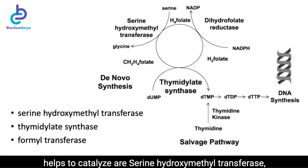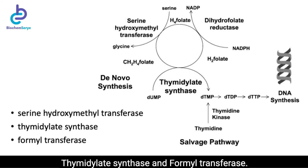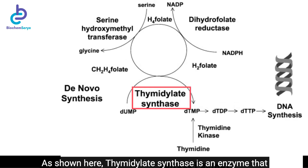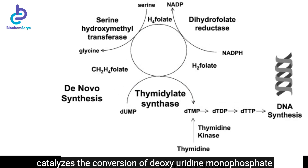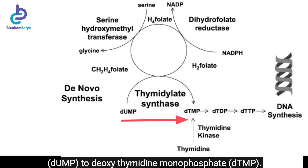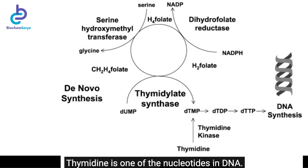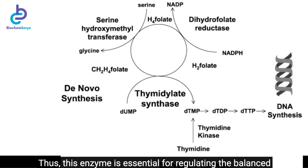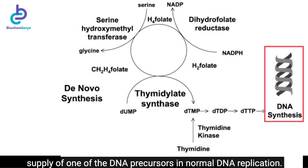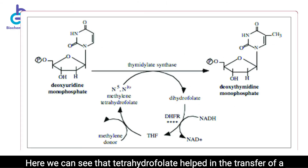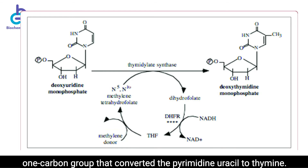Examples of reactions that tetrahydropholic acid helps to catalyze are serine hydroxymethyltransferase, thymidylate synthase, and formyltransferase. As shown here, thymidylate synthase is an enzyme that catalyzes the conversion of deoxyuridine monophosphate to deoxythymidine monophosphate. Thymidine is one of the nucleotides in DNA, so this enzyme is essential for regulating the balanced supply of one of the DNA precursors in normal DNA replication. We can see that tetrahydrofolate helped in the transfer of a one-carbon group that converted the pyrimidine uracil to thymine.